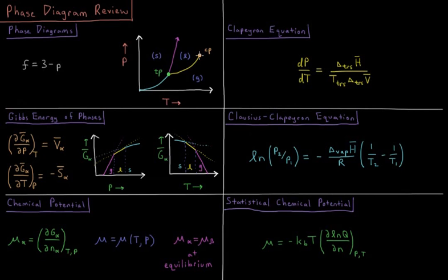We also have the critical points and the triple points, a triple point being where all three phases are in equilibrium. The number of degrees of freedom, the temperature and volume that we can change in a given phase, is three minus the number of phases in equilibrium. So two in any given pure phase, one along a coexistence curve, and zero at a triple point.